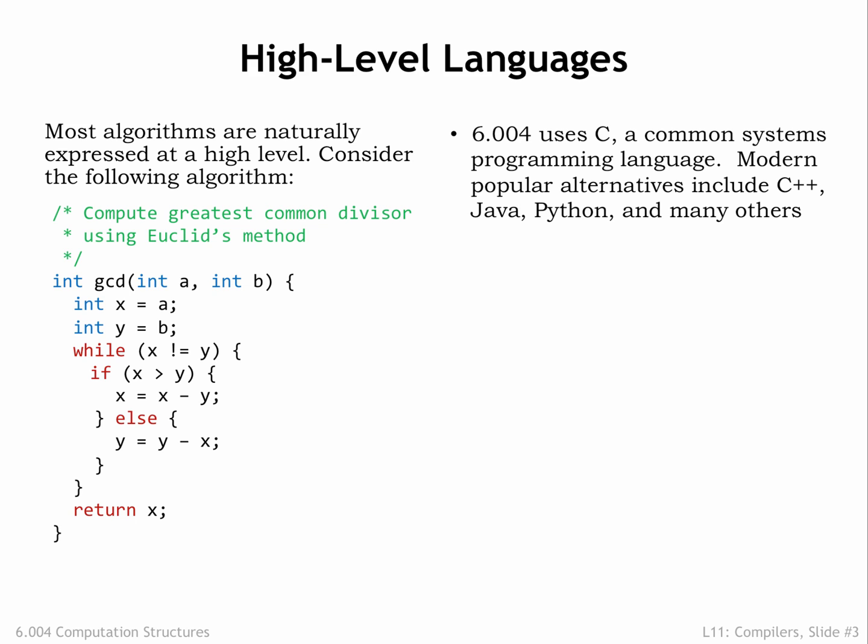C was developed by Dennis Ritchie at AT&T Bell Labs in the late 60s and early 70s to use when implementing the UNIX operating system. Since that time, many new high-level languages have been introduced providing modern abstractions like object-oriented programming along with useful new data and control structures.